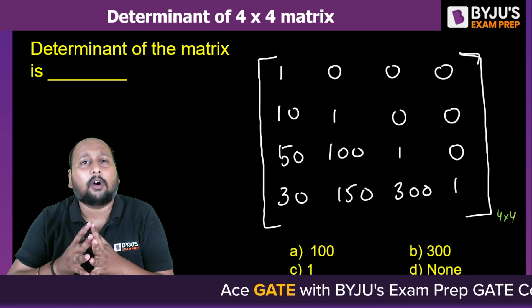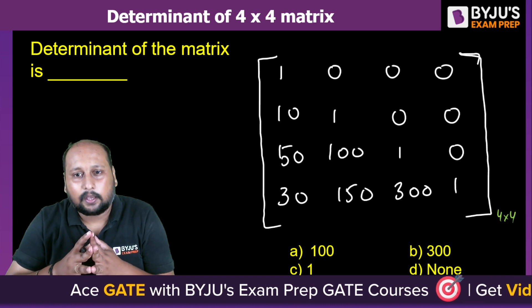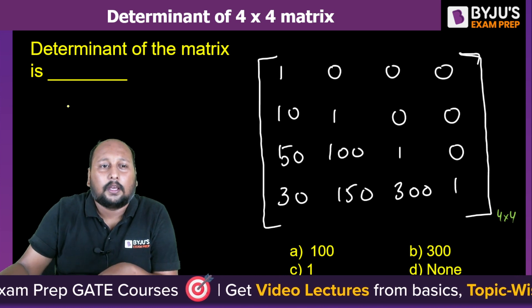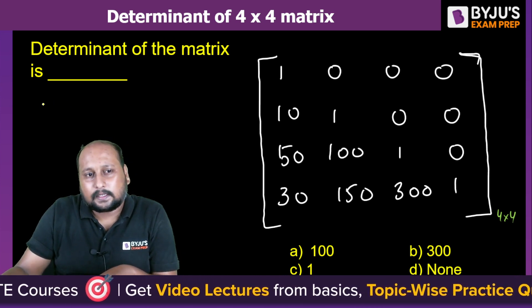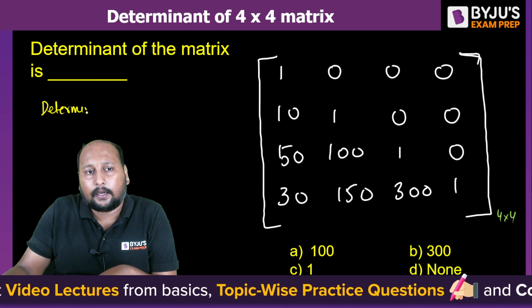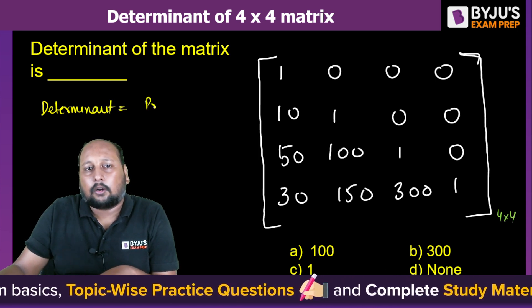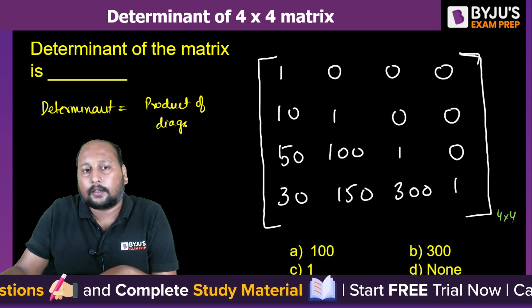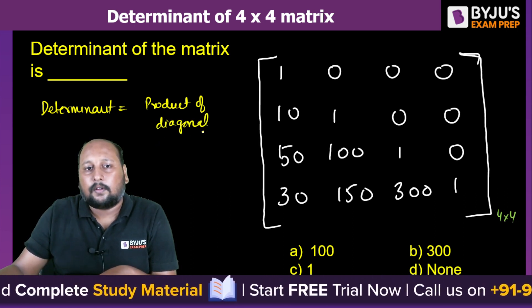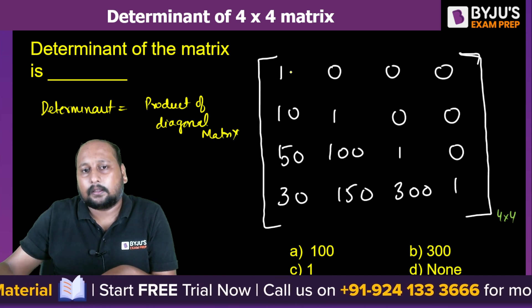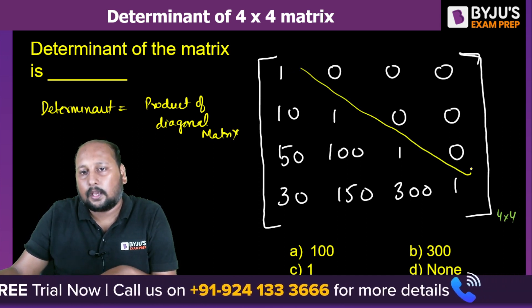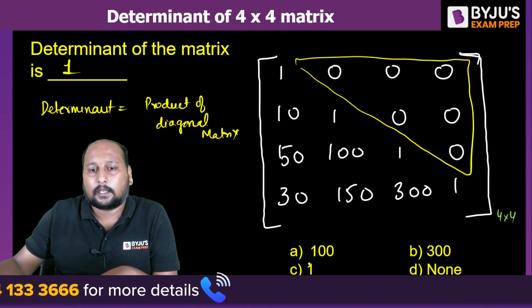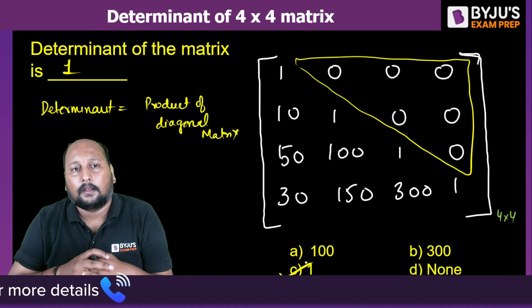But if you try to observe, this is a lower triangular matrix. So whenever you're having this kind of matrix, the determinant will be simply the product of the diagonal matrix. Over here if you try to visualize, we are having this as the lower triangular matrix, so the product of the diagonal is 1 × 1 × 1 × 1 that is equal to 1. So your answer is option C.